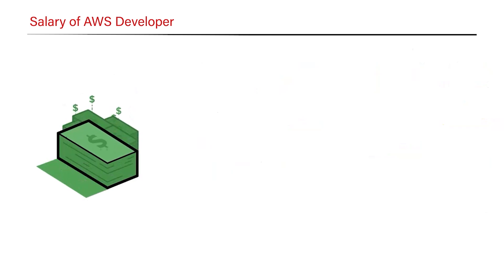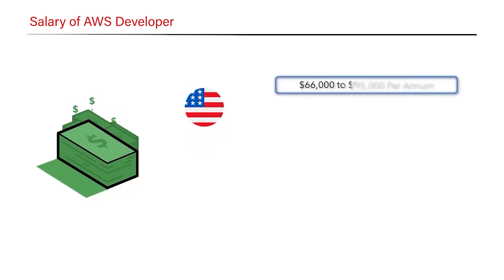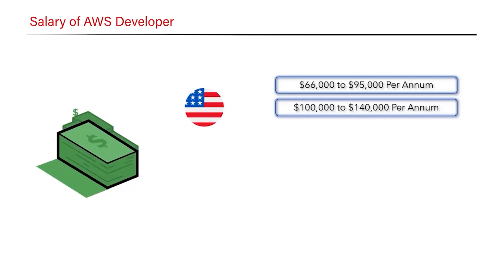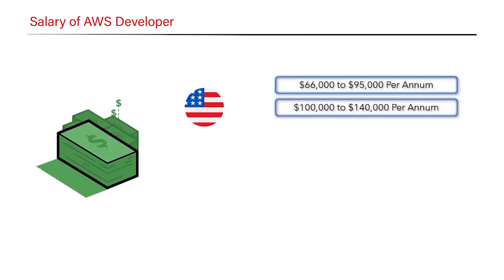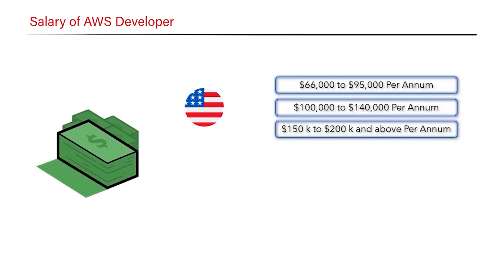Let's discuss salary packages. If you're working in the United States, freshers can expect salaries ranging from $66,000 to $95,000 per annum. Intermediate candidates with one to two years of experience can expect $100,000 to $140,000 per annum. Experienced candidates with three to four or more years can expect $150,000 to $200,000 per annum, depending on the company and project.